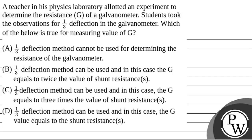Hello Watcho. Let's read the question. A teacher in a physics laboratory allotted an experiment to determine the resistance G of a galvanometer. A student took the observations for 1/3 deflection in the galvanometer. Which of the below is true for measuring value of G?